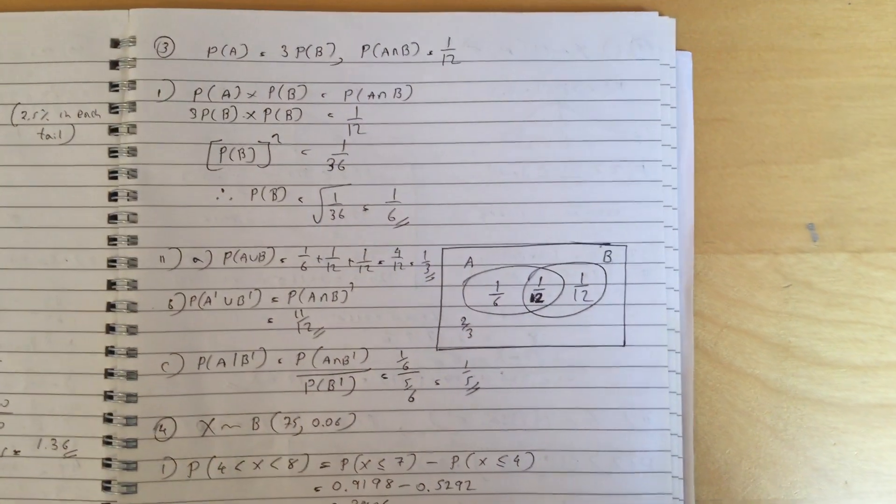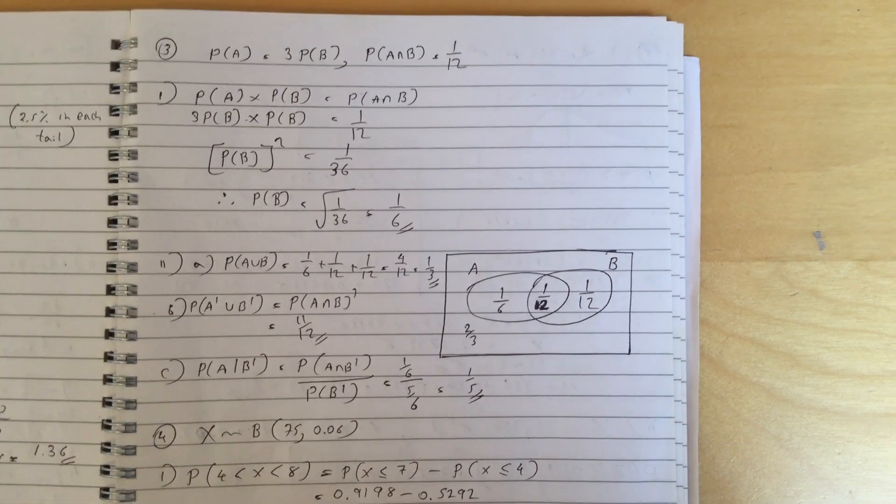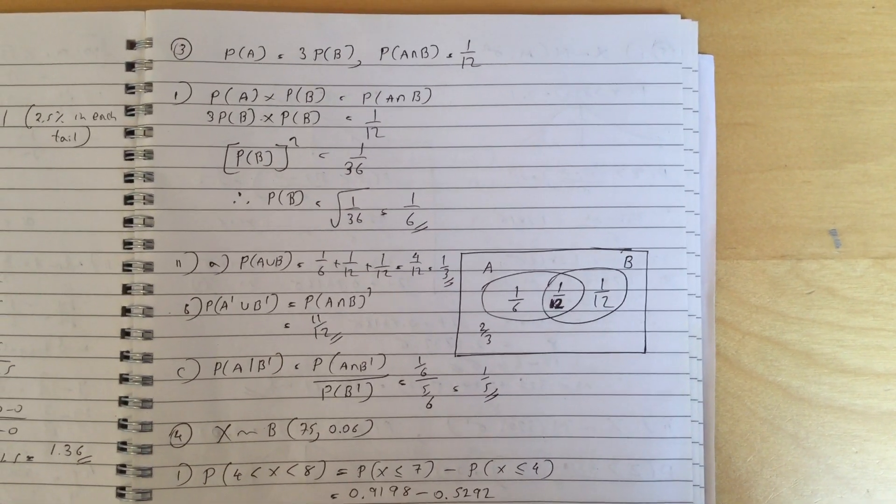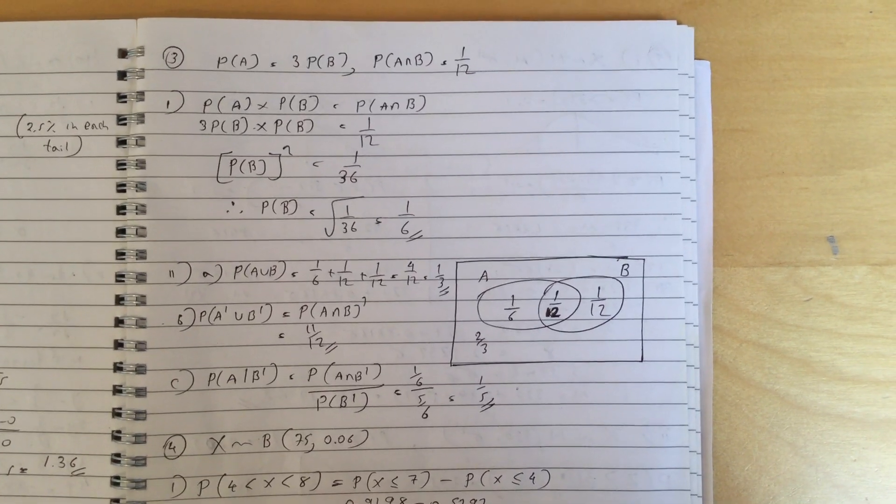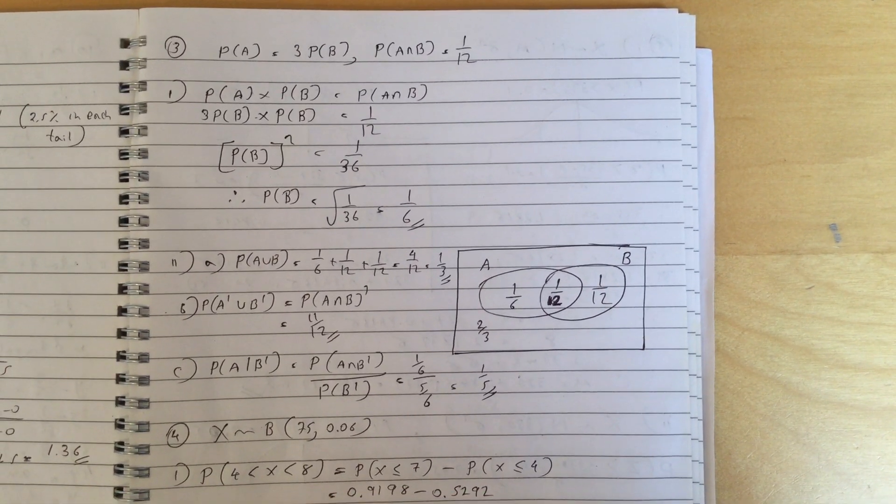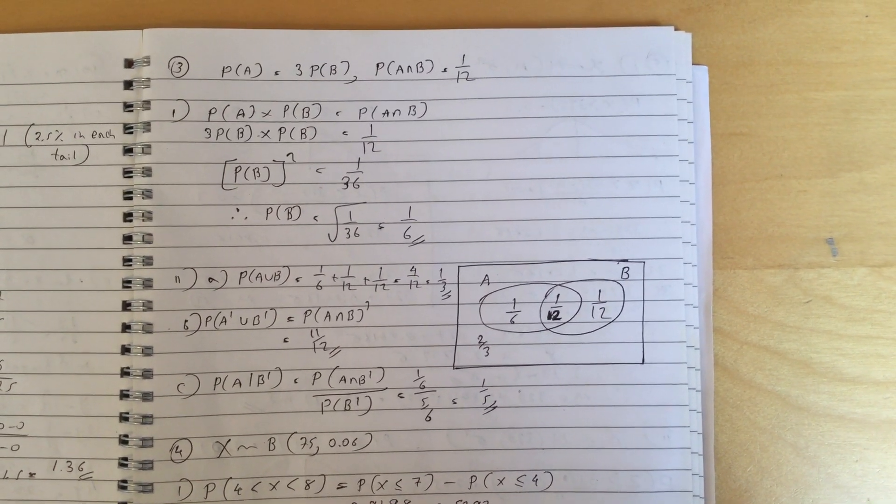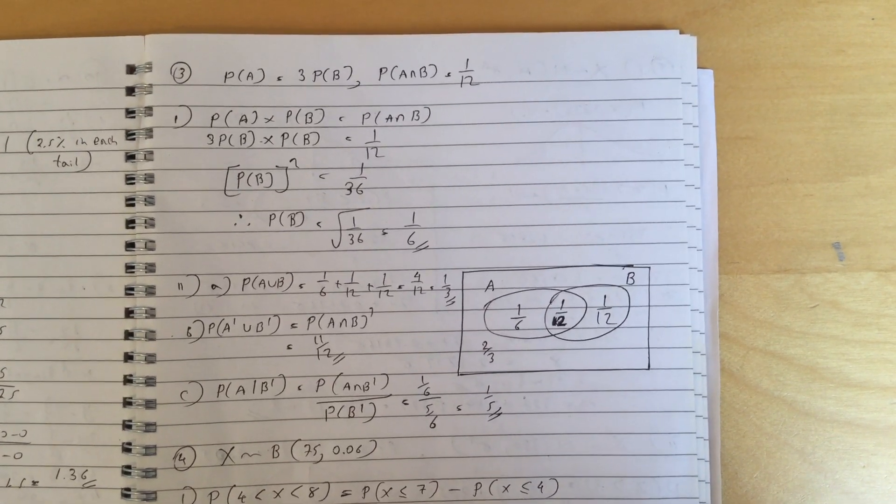Question 3, you use the formula to work out the probability of B to be one-sixth. Part 2, you go A union B equals one-third, A dash union B dash equals eleven-twelfths and A given B dash equals one-fifth.